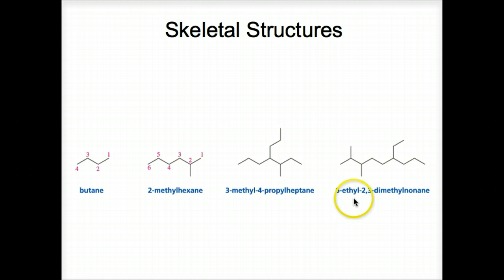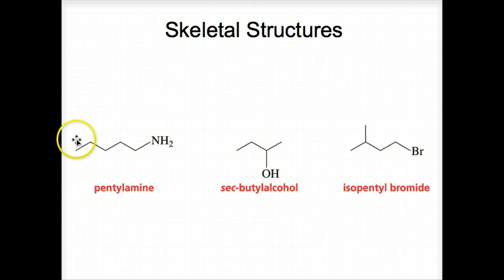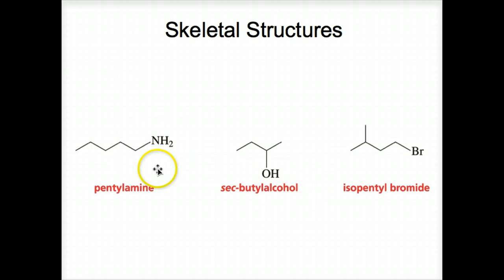Notice that ethyl comes first and methyl second. Even though it's dimethyl, the 'di' prefix is not accounted for — it's ignored when alphabetizing. Here are some additional skeletal structures: pentolamine, sec-butyl alcohol, isopentyl bromide. Notice these are skeletal structures, but other than carbon and hydrogen, we show these atoms because otherwise we wouldn't know what they are. We know carbons have hydrogens, but they're not shown.